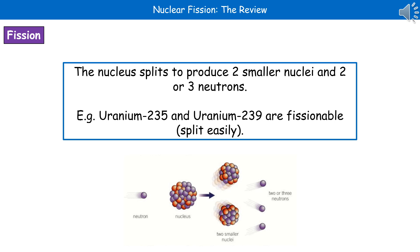Two examples of fissionable substances — ones that split easily — are uranium-235 and uranium-239.